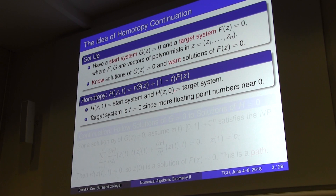You might think we usually go from zero to one, and we do, but in this case we want the target system to be t equals zero because there are more floating point numbers near zero. When I'm near zero, there's nothing to the left of the decimal point, so I have more precision to the right. That's why we start at one and go to zero.